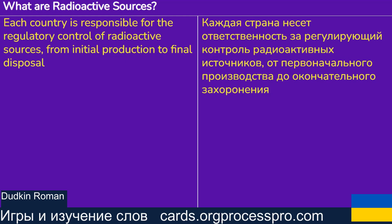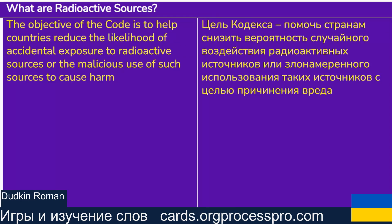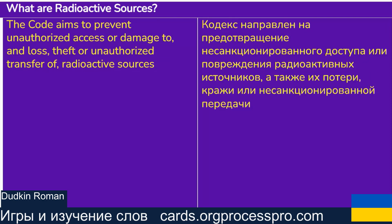Each country is responsible for the regulatory control of radioactive sources, from initial production to final disposal. The objective of the Code is to help countries reduce the likelihood of accidental exposure to radioactive sources or the malicious use of such sources to cause harm. The Code aims to prevent unauthorized access or damage to, and loss, theft or unauthorized transfer of radioactive sources.